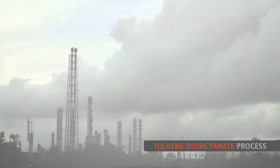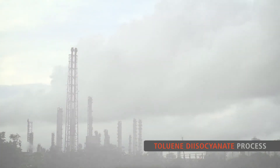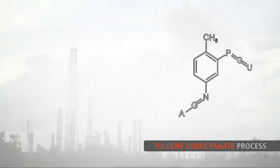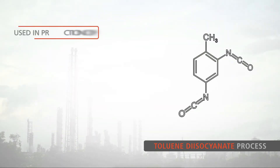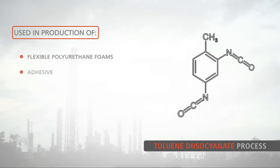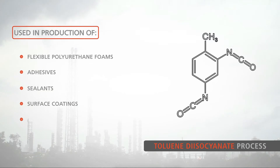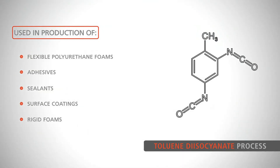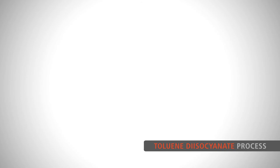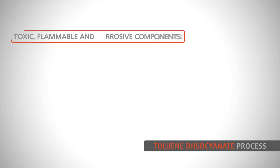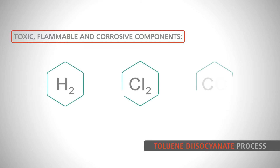Toluene diisocyanate, TDI for short, is an organic compound where two of the six possible isomers are used to produce a range of materials including flexible polyurethane foams, adhesives, sealants, surface coatings, and rigid foams used in upholstery, mattresses, and automotive seats. The process involves combining a range of toxic, flammable, and corrosive components including hydrogen, chlorine, and carbon monoxide.